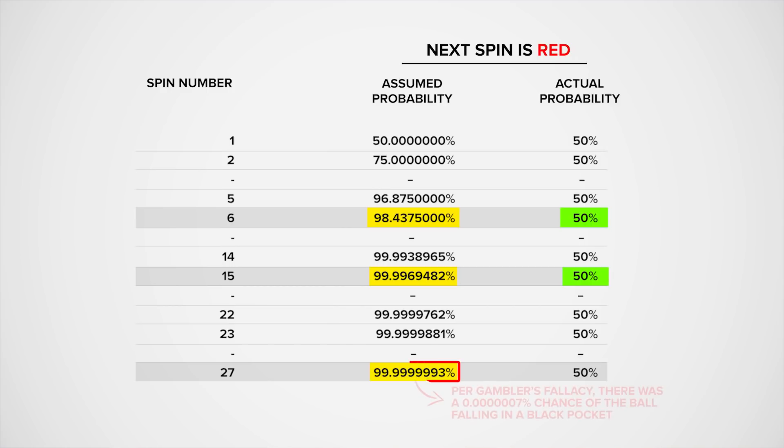At the fateful 27th spin, the gamblers believed the probability of the ball falling in a red pocket was 99.9999993% — in other words, they thought the chance of black was just 1 in 133 million. That is absolutely insane when the correct probability is 1 in 2. So coming back to our opening question, if you used the gambler's fallacy you'd calculate 6.25%, but the correct answer is 50%.